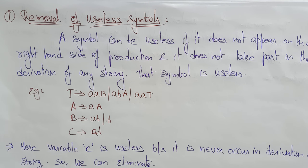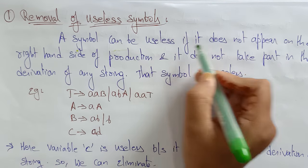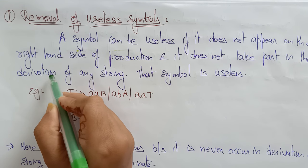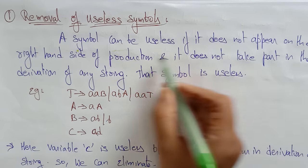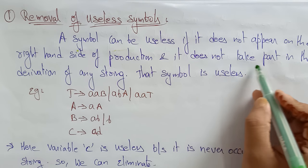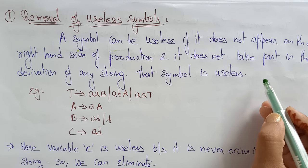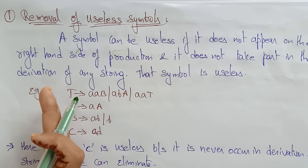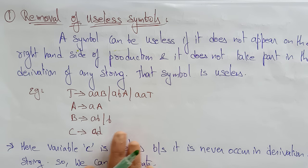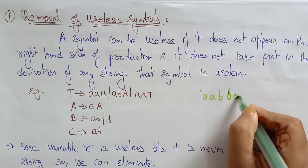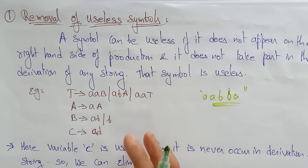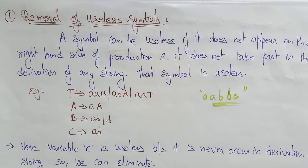How do you identify useless symbols? A symbol is useless if it does not appear on the right-hand side of the production and it does not take part in the derivation of any string. If it is not helpful in deriving any type of string, that production can be eliminated, because if it is not doing any operation on strings then it is just a wastage of memory.